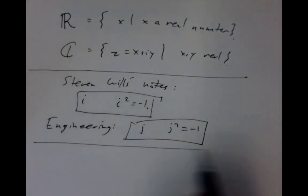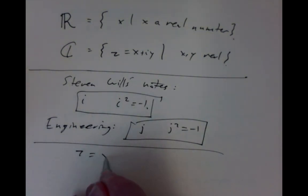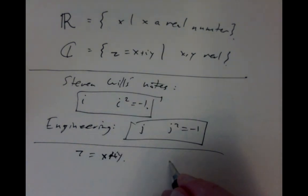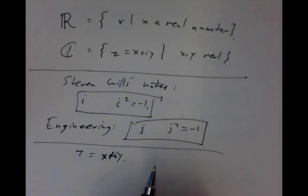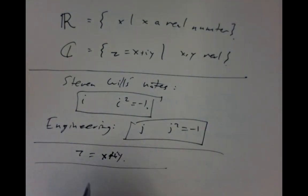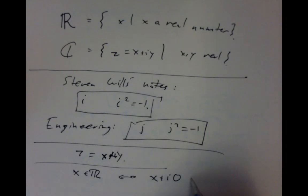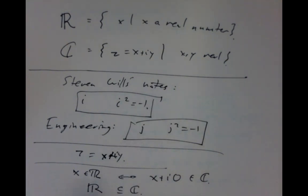Since complex numbers are written as z = x + iy, two complex numbers are equal if and only if their real and imaginary parts are equal. Every real number x is identified with x + 0i in the complex numbers — that is, a real number is a complex number with zero imaginary part. In this way, the real numbers are a subset of the complex numbers, sitting inside in the obvious way.